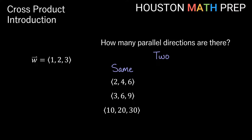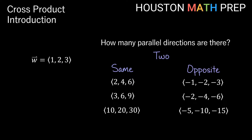There's another parallel direction, and that's the direction exactly opposite of w — in other words, 180 degrees from w. These are all negative multiples of vector w: negative 1 times w, negative 2 times w, negative 5 times w. They are all different lengths but all point in the exact opposite direction as w does in 3D space.